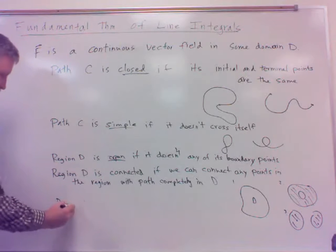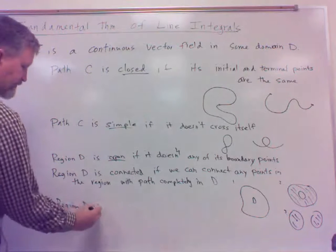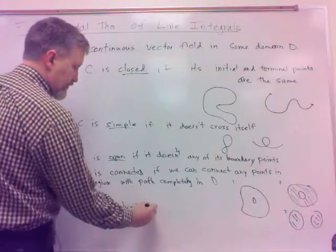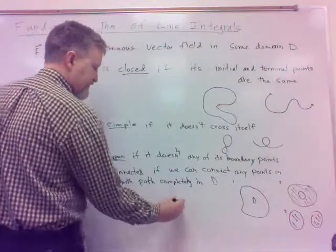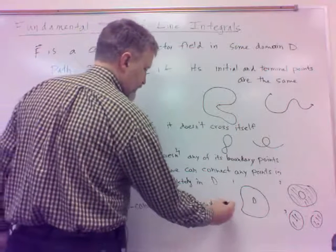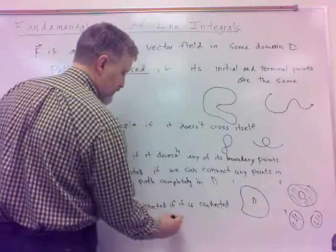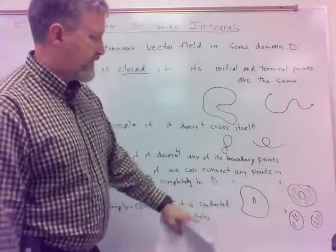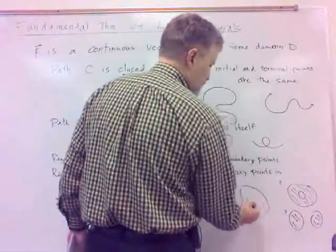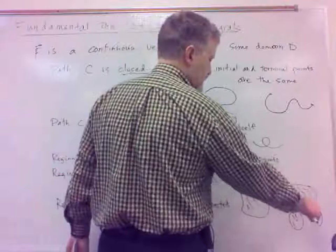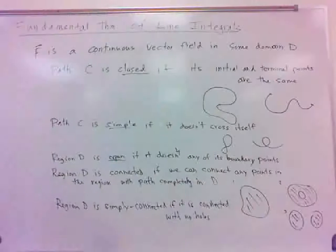Region D is simply connected if it is connected and has no holes. So a solid region with no holes is simply connected. A donut-shaped region is connected but not simply connected because it has a hole in it.